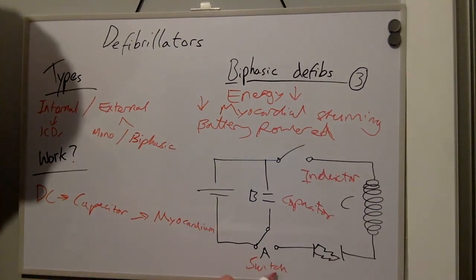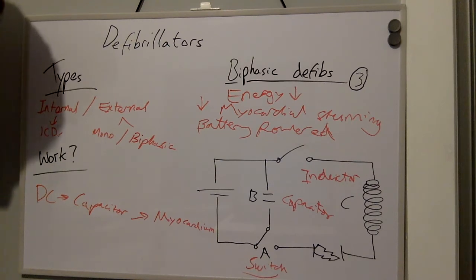Switch A has two functions. The first is to charge the capacitor and the second is to discharge the capacitor into the patient when the second switch is on.